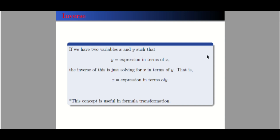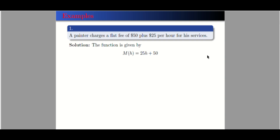For example, a painter charges a flat fee of 50 dollars plus 25 dollars per hour for his services. The function is given by m(h), where m stands for money. This is equal to 25 times h — because it's 25 dollars per hour — plus 50 dollars. So this is our function for the money, or the charge that the painter will get for his service.